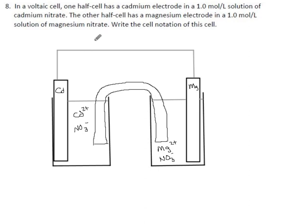Cell notation is a condensed way of writing the reactants in a cell in order from one side to the other. You write one of the solid pieces like the cadmium, then the ions in the liquid, then the ions in the other liquid, and then the other solid.